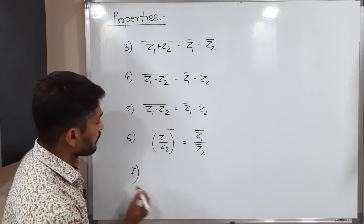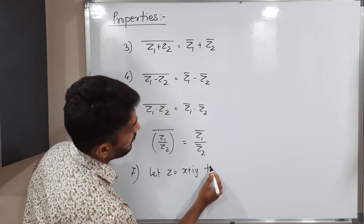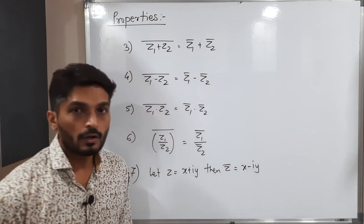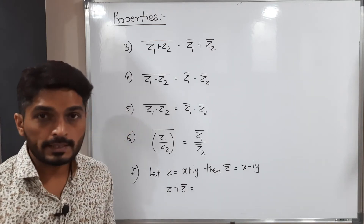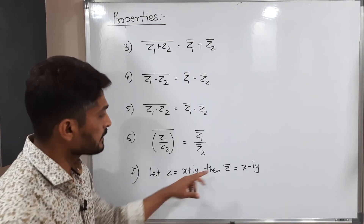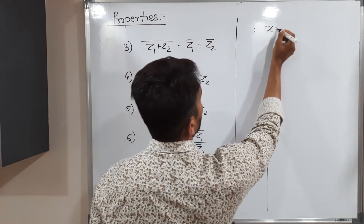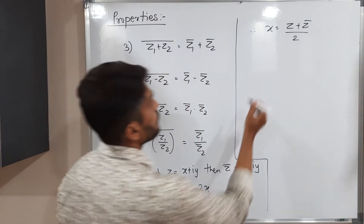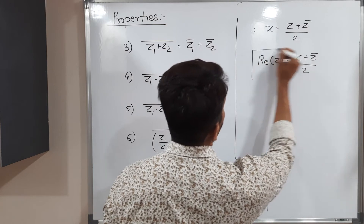Next property: let z equal x plus iy and z-bar equal x minus iy. Adding them, z plus z-bar gives 2x on the right-hand side because the iy terms cancel. Therefore x equals z plus z-bar all divided by 2. Since x is the real part of z, we get: the real part of z is equal to z plus z-bar over 2.